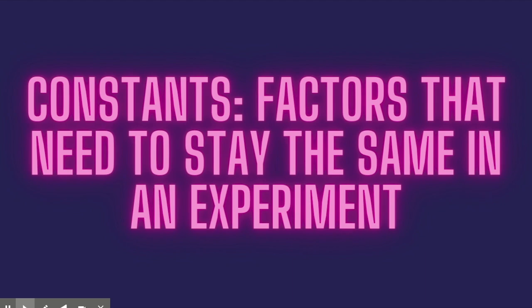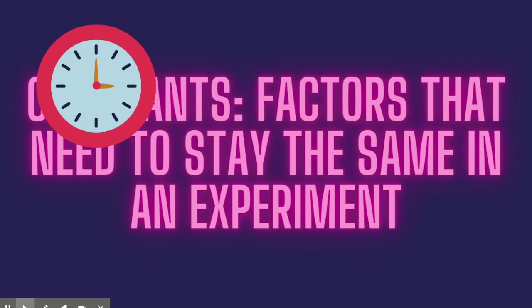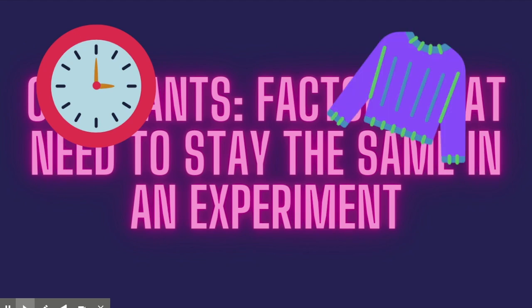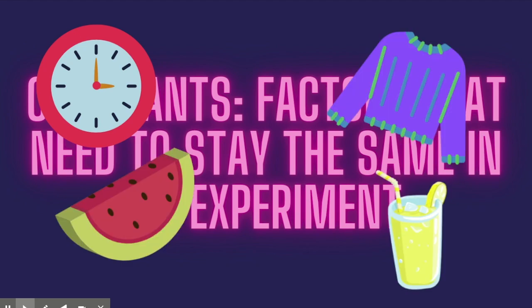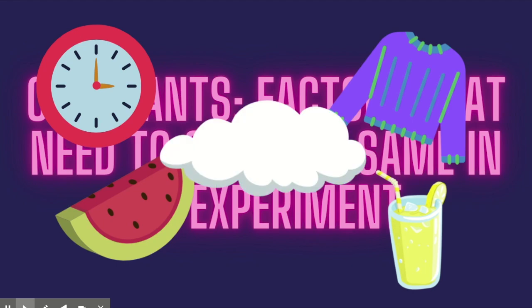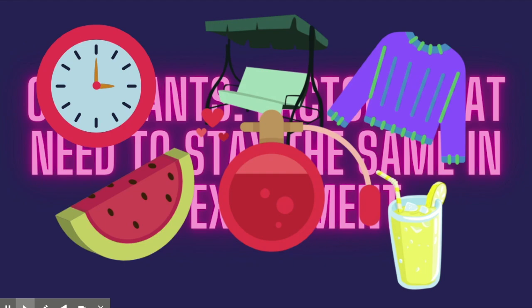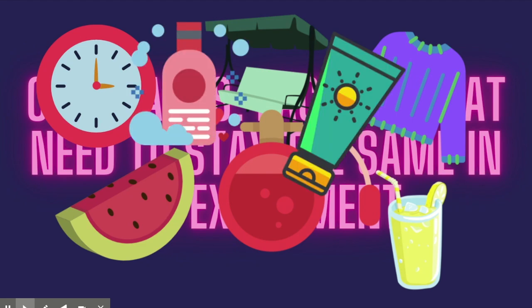Take a few moments to think about other factors I would need to keep constant in this experiment to ensure that the only thing affecting the number of bug bites I get is the type of bug spray. Here are some things that might affect my results if I don't keep them constant: the amount of bug spray I use, the time of day I did the experiment, what clothes I wear for each test, whether I'm eating or drinking anything during the test — this might attract more bugs — the weather, the location, whether I'm sitting in the grass or on a porch, and the shampoo, lotion, perfume, or other things on my skin for each test.